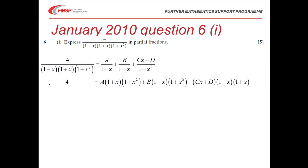Starting the partial fractions: we split the single fraction into three. It's A over (1 − x) and B over (1 + x), as before, and when we have the factor (1 + x²) in the denominator we need Cx + D in the numerator. Taking a common denominator on the right, the numerator becomes A(1 + x)(1 + x²) + B(1 − x)(1 + x²) + (Cx + D)(1 − x)(1 + x).